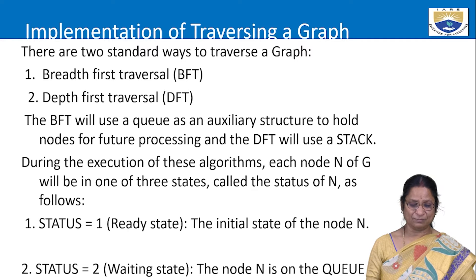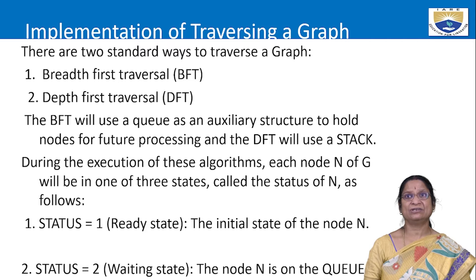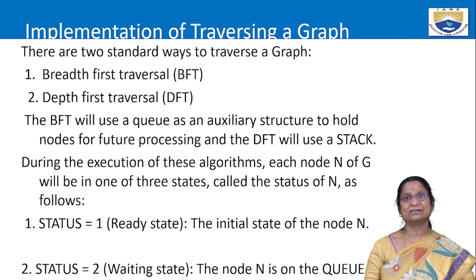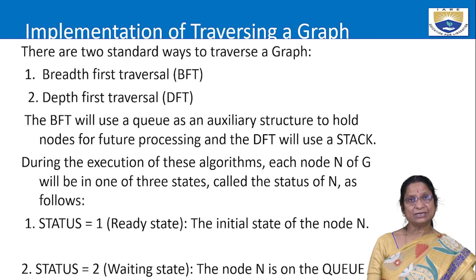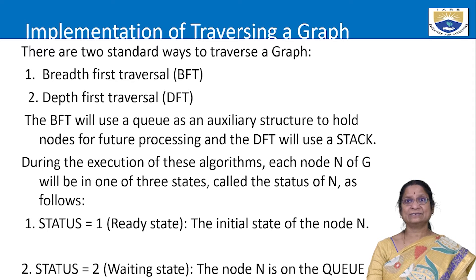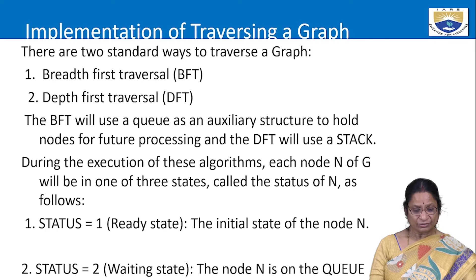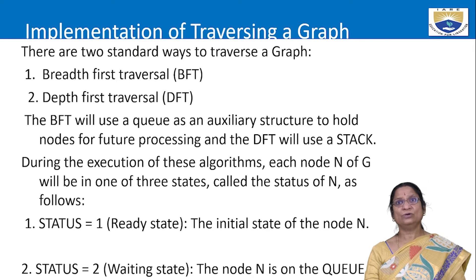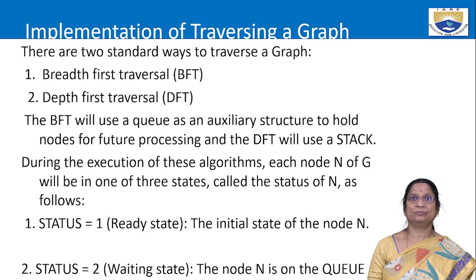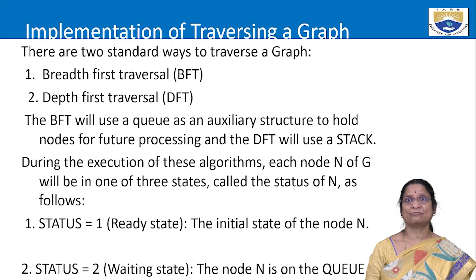Breadth-first traversal uses a queue as an auxiliary data structure, whereas depth-first traversal uses a stack. Both traversal techniques need some additional memory space. During execution of these two algorithms, we keep track of a status variable for each node.